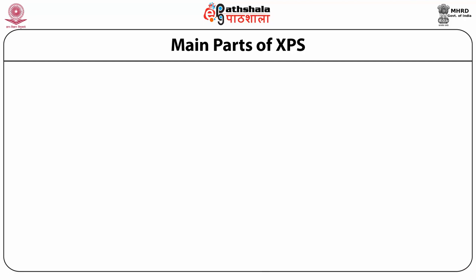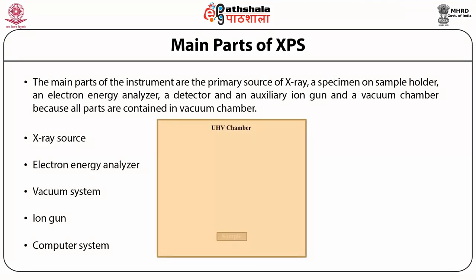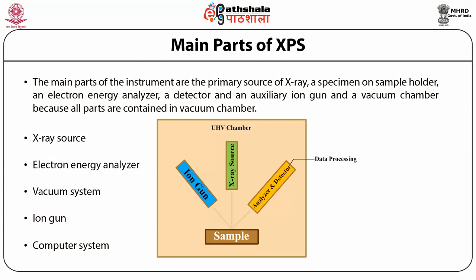To understand X-ray photoelectron spectroscopy clearly, we need to know about the instrumental part of the XPS technique. The main parts of the instrument are the primary source of X-rays, a specimen, a sample holder, an electron energy analyzer, a detector, an auxiliary ion gun, and a vacuum chamber. All these parts are contained in the vacuum chamber. The figure shows the general arrangement of an X-ray photoelectron spectroscopy instrument.